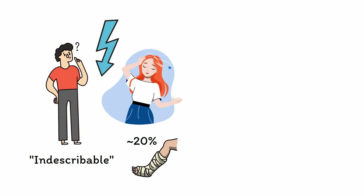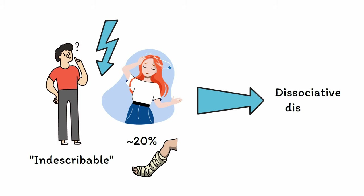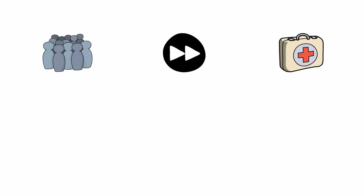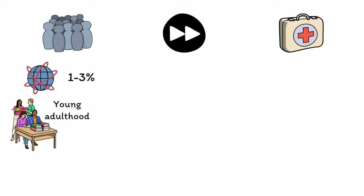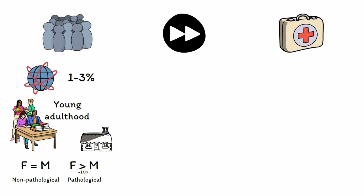For some people, dissociative experiences can become frequent or severe enough that they turn into a dissociative disorder. While dissociative experiences are common, dissociative disorders are much more rare, with estimates placing the prevalence at around 1–3% of the population. They are most commonly diagnosed in early adulthood, with very few cases beginning after one's 20s or 30s. Non-pathological dissociation occurs with approximately the same frequency in both men and women. However, pathological dissociation appears to be much more common in women, with dissociative disorders being diagnosed up to 10 times more often in women than men. This discrepancy is believed to be at least partially related to higher rates of abuse histories in women, as a history of trauma — especially during early childhood — is a major risk factor, with more than 90% of people diagnosed with these disorders reporting a history of childhood trauma.